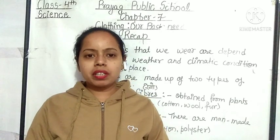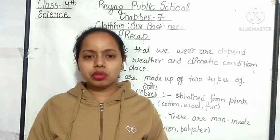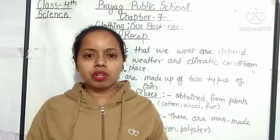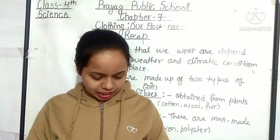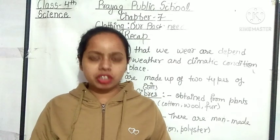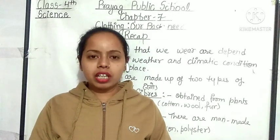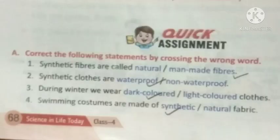Students, as you know, this chapter is included in our activity session, so we are not doing any question answers of this chapter in our classwork copy. Now our second exercise is on page number 68 — correct the following sentences by crossing the wrong word. Synthetic fibers are called man-made fibers. Synthetic clothes are waterproof. During winter we wear dark colored clothes. Swimming costumes are made of synthetic fabric.